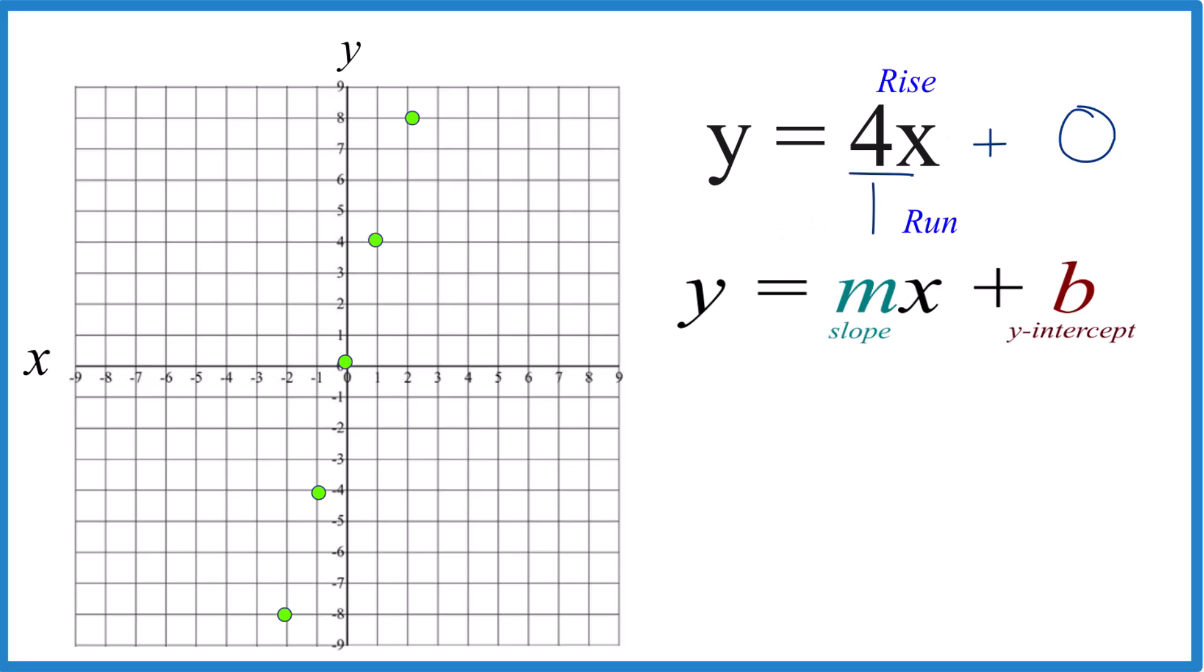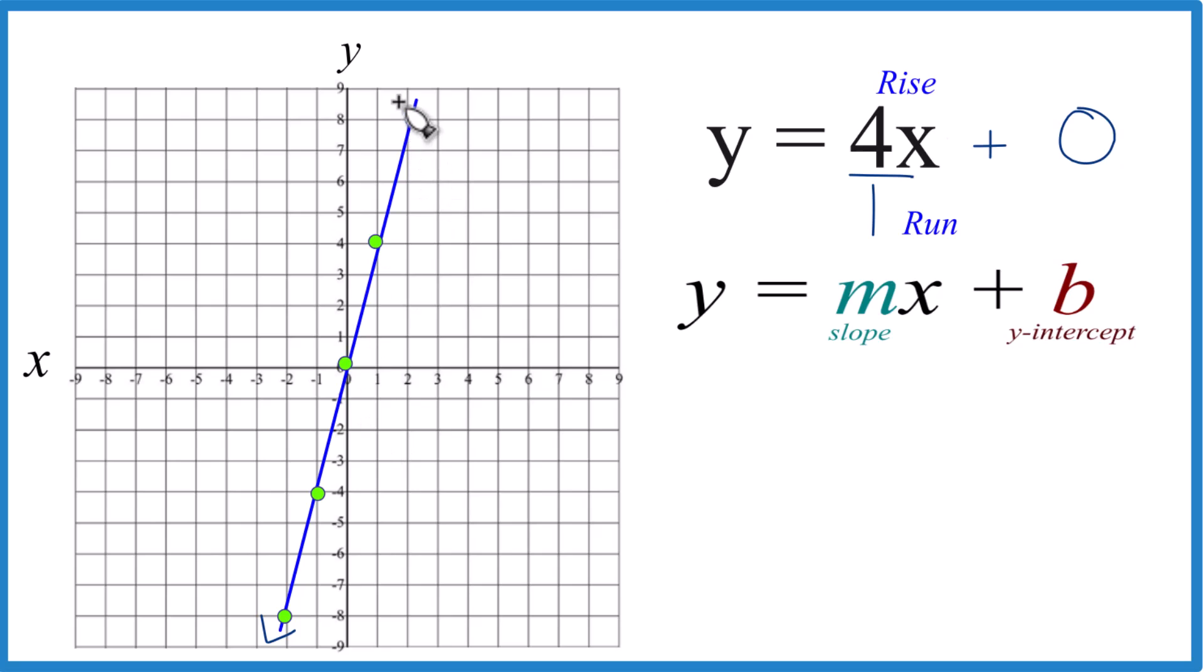And there's a line for y equals 4x. Let's put a line through that. And we'll put arrows to show that this goes to infinity, and we're done. That's the line for the equation y equals 4x, and we're using slope-intercept form.